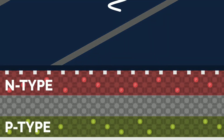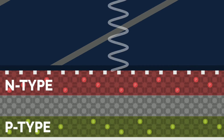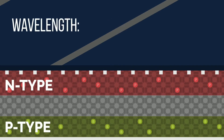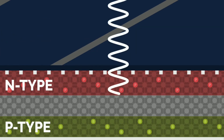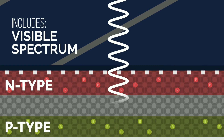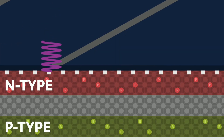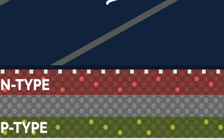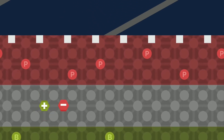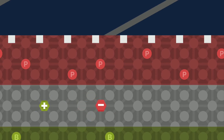When light waves hit the top surface of the silicon solar cell, only light with wavelengths from a specific window of the solar spectrum — 350 to 1140 nanometers — are absorbed into the middle layer of the solar cell. This range of wavelengths includes the visible spectrum. Ultraviolet wavelengths are so short they stop at the surface, and infrared wavelengths are so long they can't be absorbed and pass right through the cell or are reflected back. The light wave knocks an electron off a silicon atom, setting the electron loose and leaving an area of positive charge, a hole, where the electron used to be.